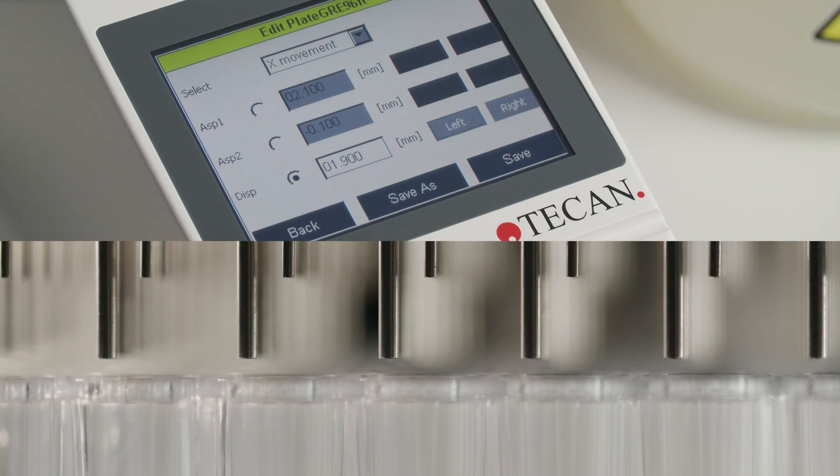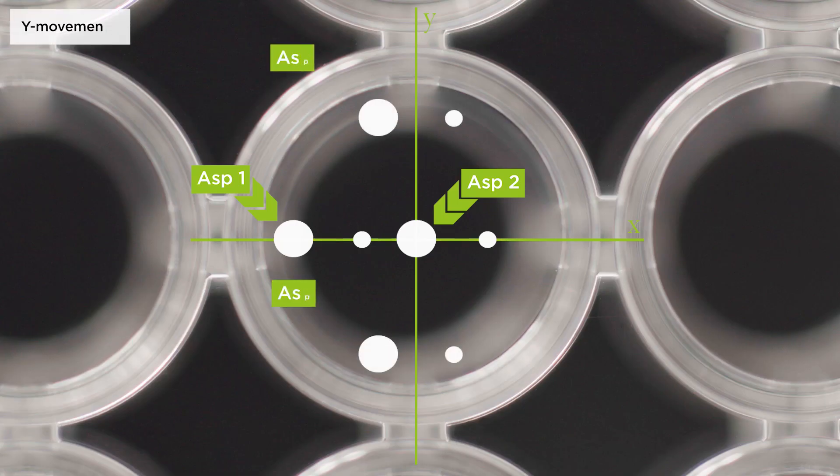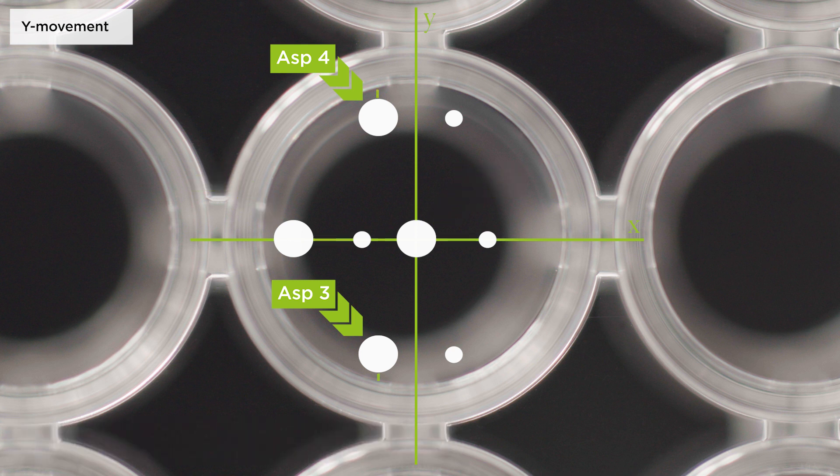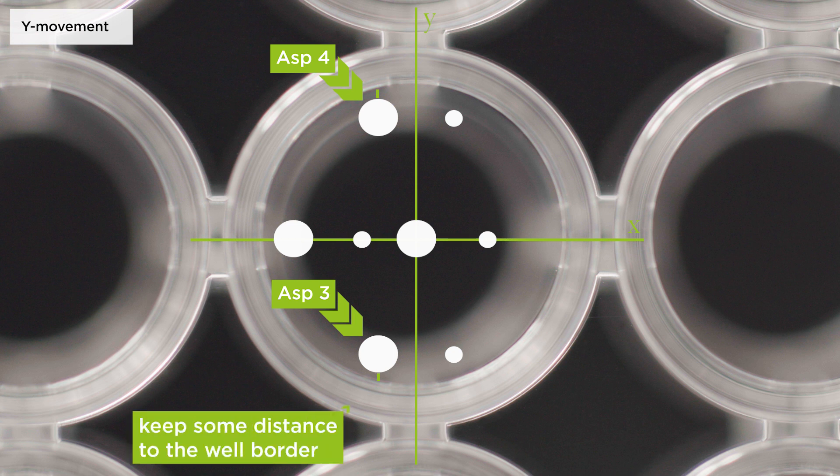If the instrument is equipped with an indexing mechanism, four aspiration positions can be selected when working with a 96 high throughput or a 96 indexing wash head using 96 well microplates. Aspirate three should be set at the front of the well and aspirate four at the back, without touching the walls.